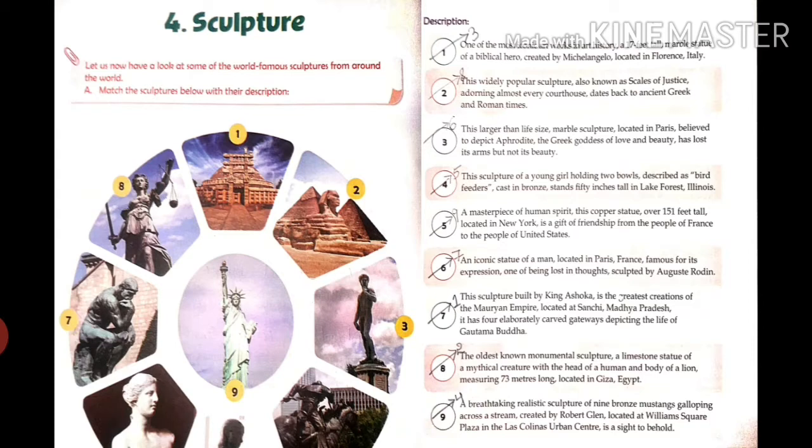Third one is related to the sixth picture. This larger-than-life-size marble sculpture located in Paris, believed to depict Aphrodite, the Greek goddess of love and beauty, has lost its arms but not its beauty. It is related to the sixth picture.